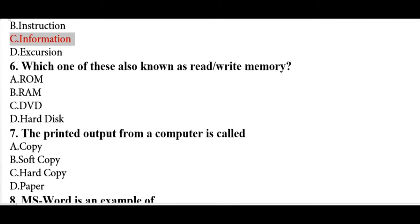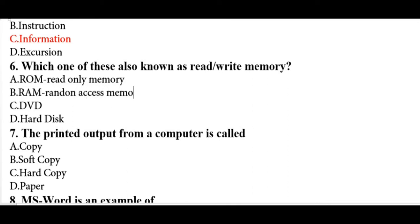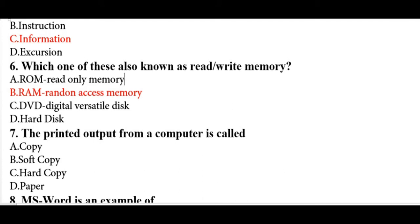Which one is also known as read-write memory? The full form of ROM is Read Only Memory, and the full form of RAM is Random Access Memory. The full form of DVD is Digital Versatile Disc. RAM can both read and write, while ROM — as suggested by its abbreviation — can only read.